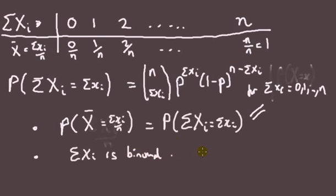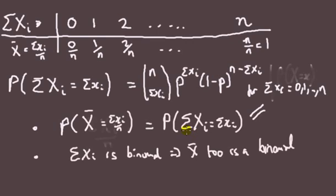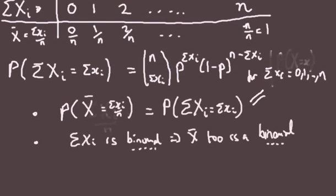x-bar is the same as the sum of x_i but divided by n. Informally, the distribution is based on the sum of x_i, and dividing through by a constant n doesn't change the type of distribution. So x-bar is also binomial in character — we've now got the key to write down the distribution of x-bar.